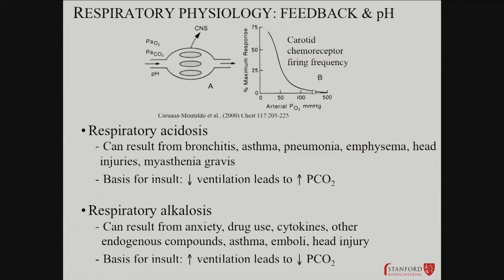Let's talk about respiratory acidosis and alkalosis. The carotid chemoreceptors are very responsive and can affect acid balance. Thinking about two primary respiratory problems: respiratory acidosis and respiratory alkalosis. In respiratory acidosis, the common theme is reduced ventilation of the lungs — therefore you're not blowing off enough CO2, pushing the Henderson-Hasselbalch equation in one direction and making more protons in the blood.